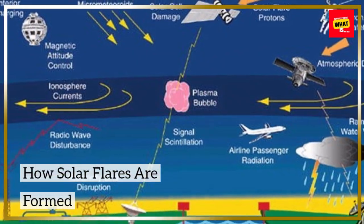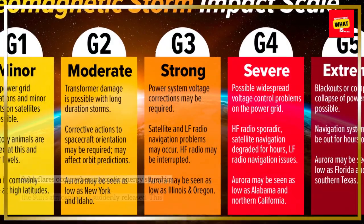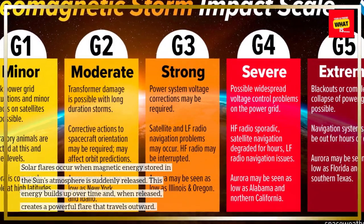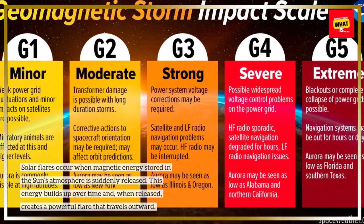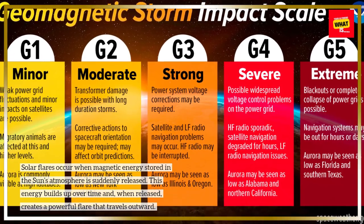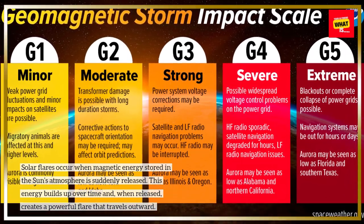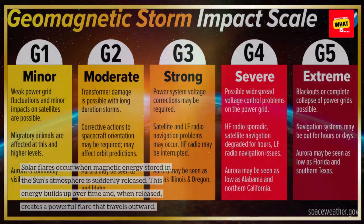How solar flares are formed. Solar flares occur when magnetic energy stored in the sun's atmosphere is suddenly released. This energy builds up over time and, when released, creates a powerful flare that travels outward.